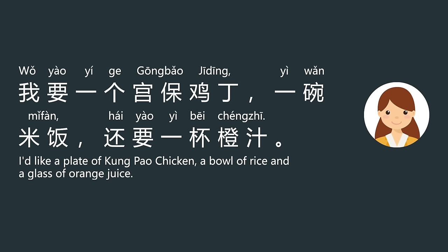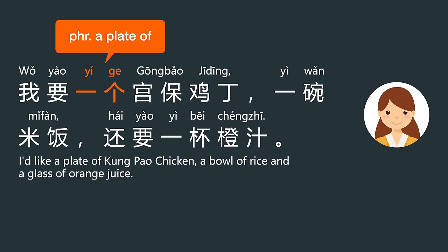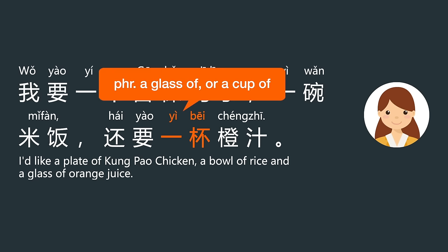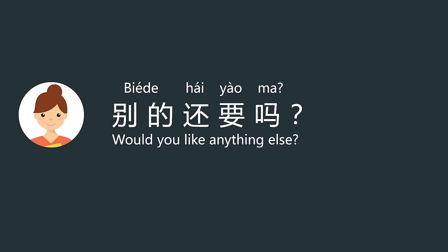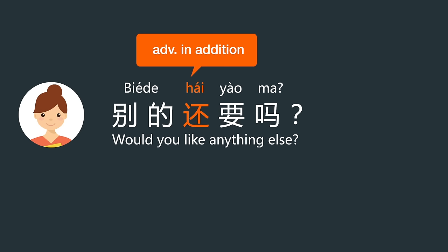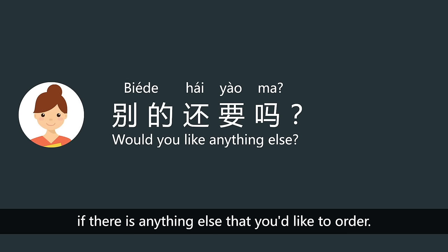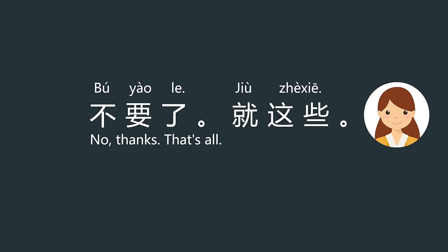A server comes to your table. 一个 here means a plate of. 一碗 means a bowl of. 一杯 means a glass of or a cup of. 别的还要吗？还要一杯橙汁 — this sentence means: in addition to 宫保鸡丁, 米饭, and 橙汁, is there anything else you'd like to order? 不要了 — No more. 就这些 — That's all. 好的.